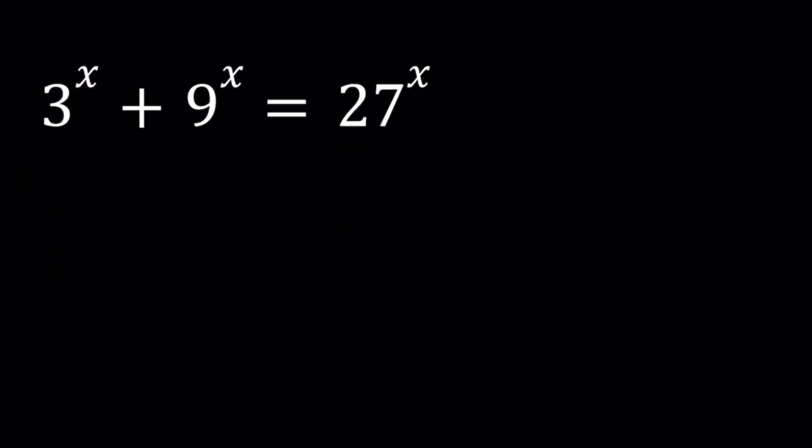Today we're going to be solving a nice exponential equation from Kettering University math olympiads. I think we've done a problem before from the same olympiads. If I find it I'll link it down below. We have 3 to the power x plus 9 to the power x equals 27 to the power x and we're looking for real x values.